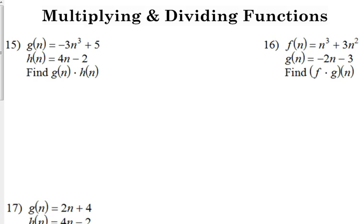It is literally just as simple as g of n is negative 3n cubed plus 5 times h of n is 4n minus 2. Binomial times a binomial, FOIL, BOX, whatever method you use.